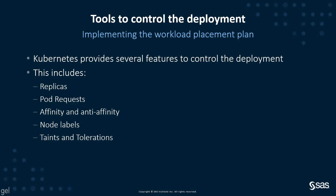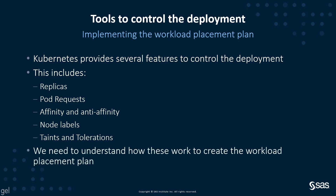Some of these we briefly touched on in the last video. For example, we talked about using node labels and the need for taints and tolerations. But indirectly, we're also seeing things like pod affinity and anti-affinity. We need to understand how these work to create the workload placement plan.